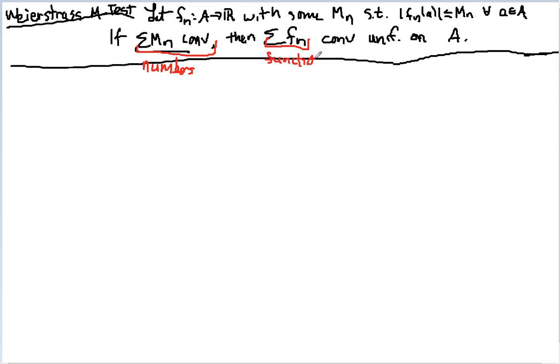So basically, this allows you, as long as you have the bounds, to only check to see if a sequence of numbers, or a series of numbers converges, and not the series of functions. So we'd rather work with numbers than functions, so that's what we do. And here's an example.